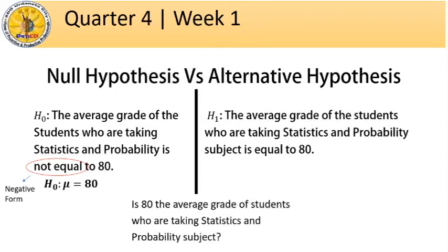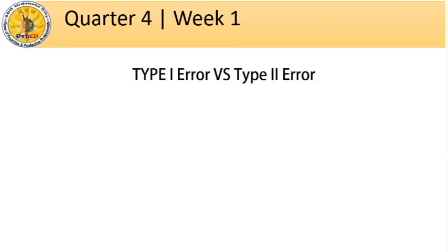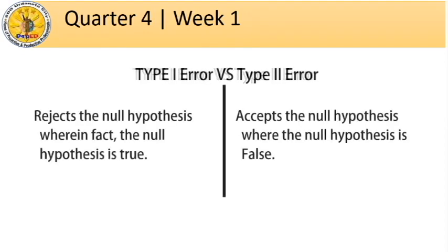In symbols, we write the alternative hypothesis as mu equals 80. In research, researchers also commit errors. There are two types of errors: type 1 and type 2. If a researcher rejects the null hypothesis when in fact the null hypothesis is true, then the researcher committed a type 1 error. On the other hand, if the researcher accepted the null hypothesis when the null hypothesis is false, the researcher committed a type 2 error.